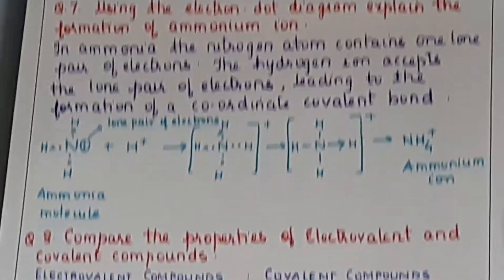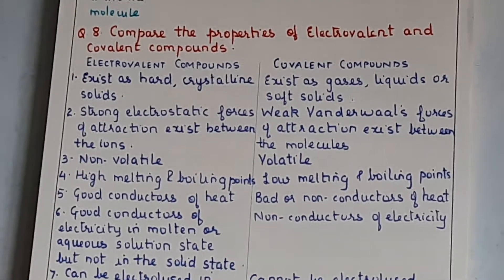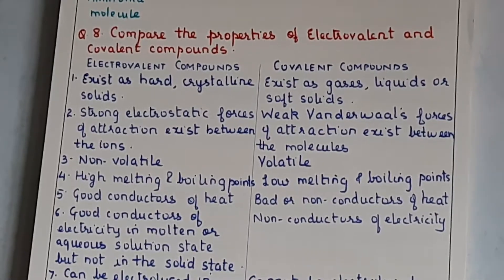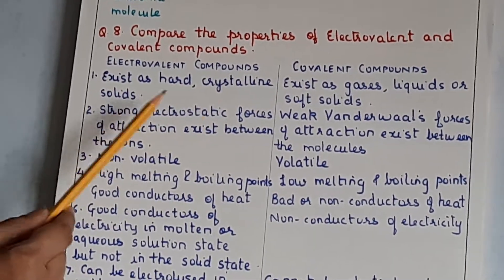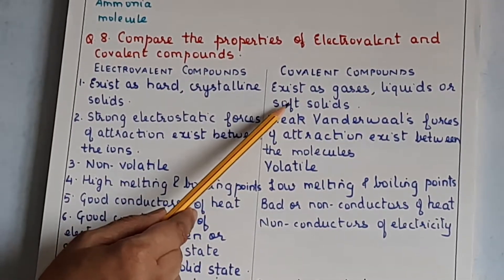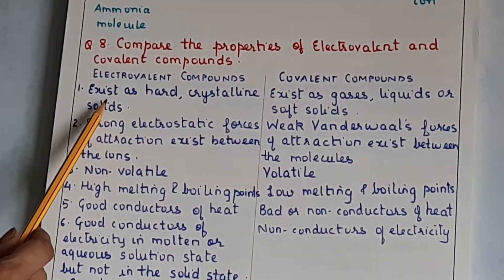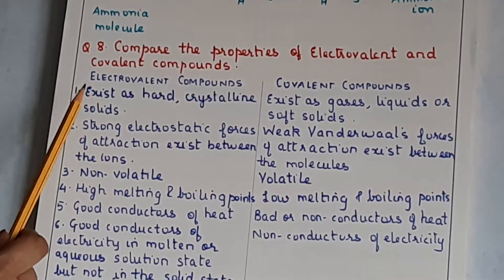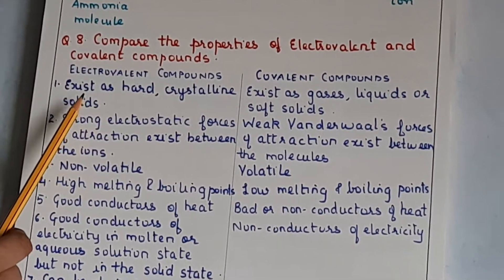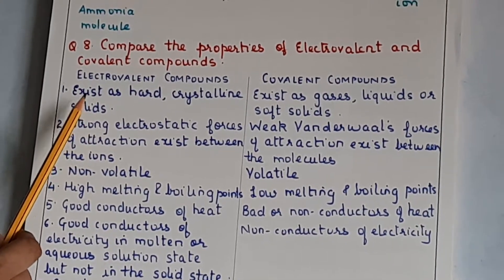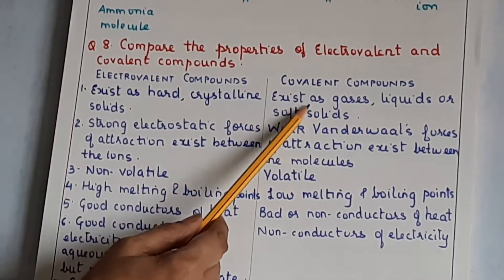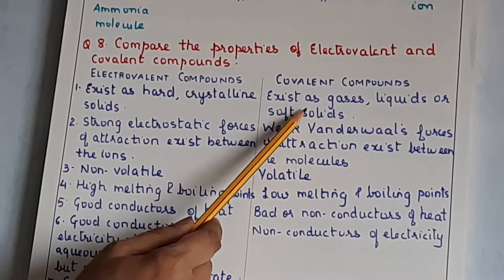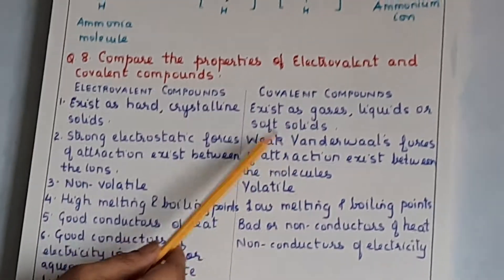We will now discuss the properties of electrovalent and covalent compounds. Electrovalent compounds generally exist as hard crystalline solids, whereas covalent compounds are gases, liquids, or soft solids. Electrovalent compounds are formed by strong electrostatic forces of attraction between oppositely charged ions, so those forces hold molecules together closely packed, making them hard solids. Covalent compounds have weak van der Waals forces of attraction, so molecules generally exist as gases, liquids, or soft solids.